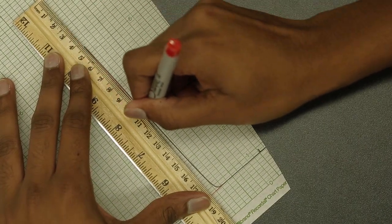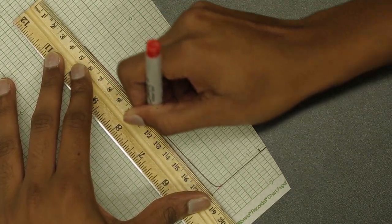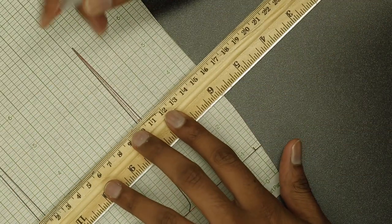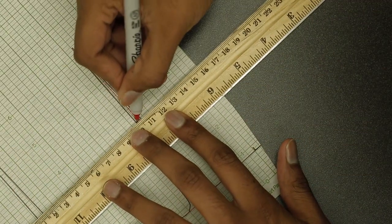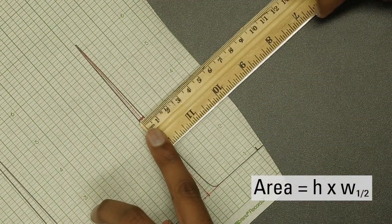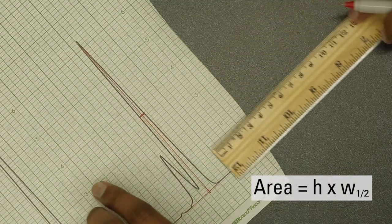To calculate the area, measure the height of the peak from the baseline and measure the width of the peak at the half height. The area of the triangle is equal to the product of the height times the width at half height.